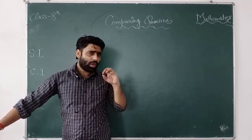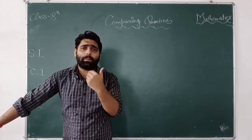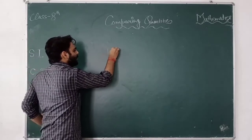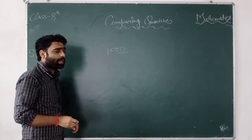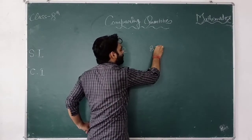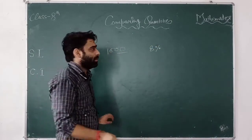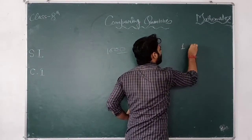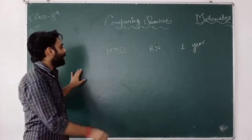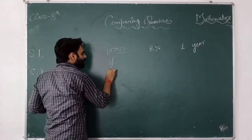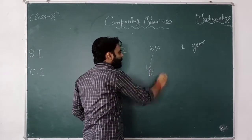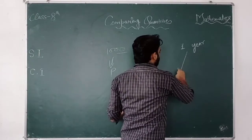Suppose we have a principal amount — that is 1000. The rate of interest is 8% per year, and the time period is 1 year. So we have the principal, the percentage rate, and the time.